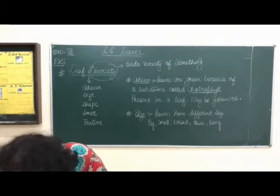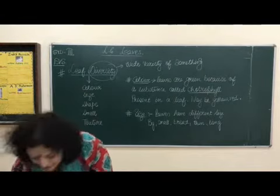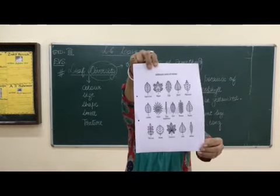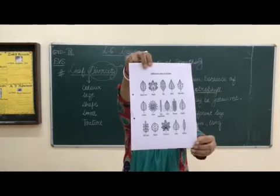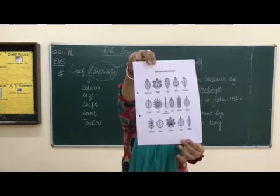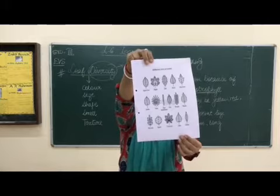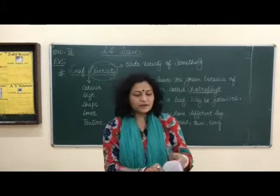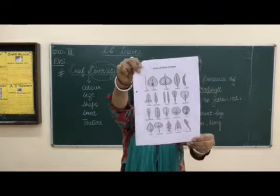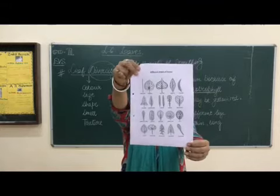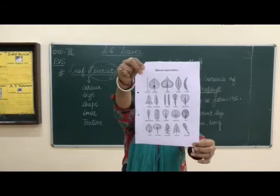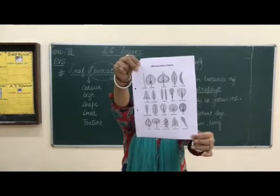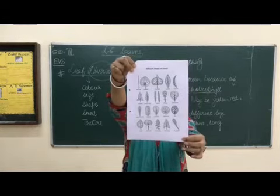Now we will talk about variety of leaves. I will show you different sizes of leaves. Now on the next page I will show you different shapes. As we saw, the leaves I was showing had different colors, different sizes, and shapes. Here we have different shapes: round leaf, flat leaves, and thin long leaves.